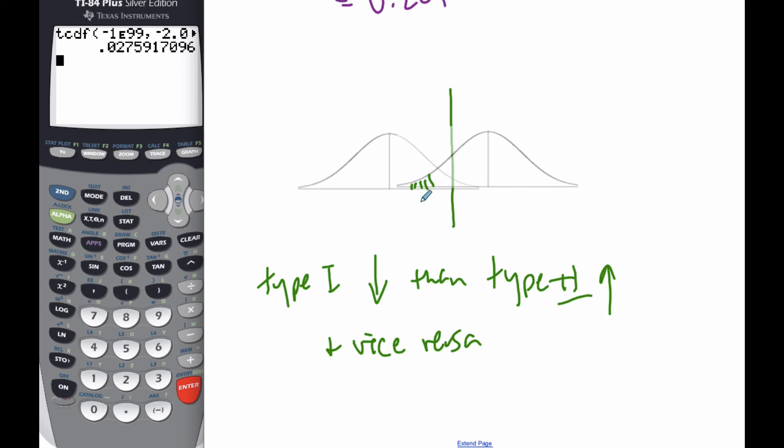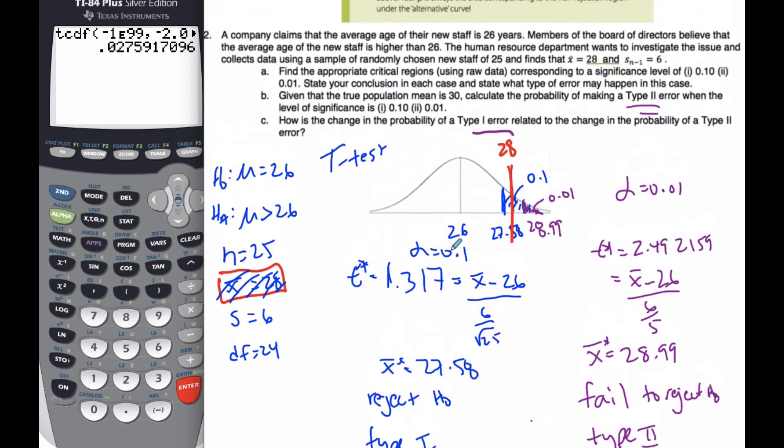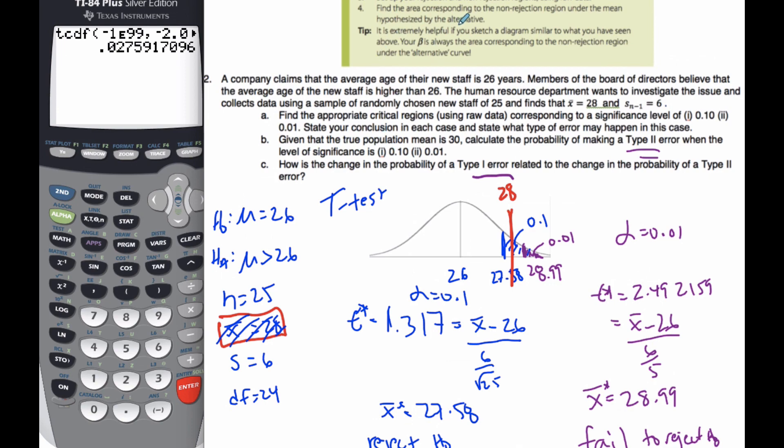The only way to combat that situation is you want to take these normal curves and make them skinnier. When you make them skinnier, you decrease the area. The only way to do that is to increase your sample size n. There's a whole bunch of information about Type 1 and Type 2 error in that sense.